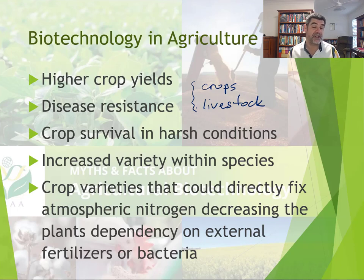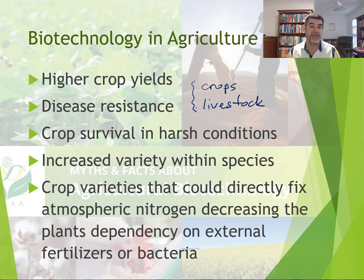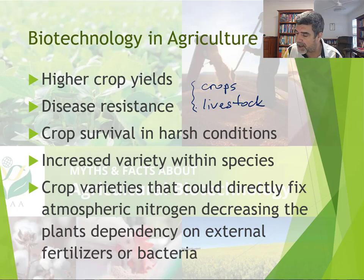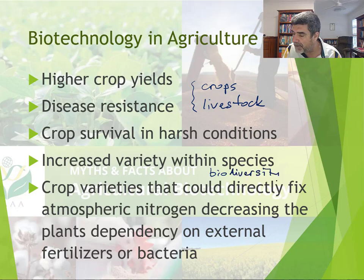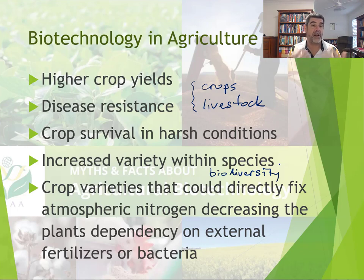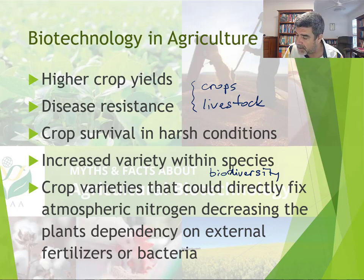Crop survival in harsh conditions is another benefit — when conditions change and we have periods of very low rain, crops will be able to survive through those harsh conditions until conditions improve. Increasing variety within species is also possible. This runs somewhat counter to discussions around biodiversity, where agriculture can diminish biodiversity and create monocultures. With biotechnology we can actually increase variety, add new genes into species, and perhaps increase the gene pool in that way.